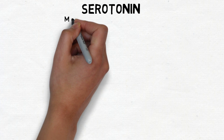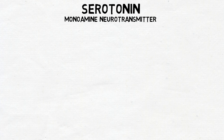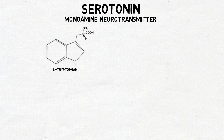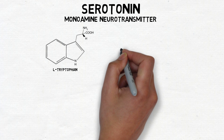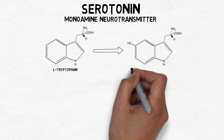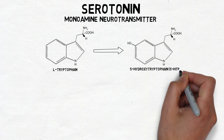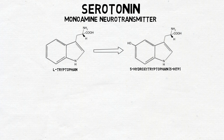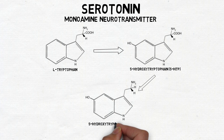Serotonin is a monoamine neurotransmitter, a term that refers to its chemical structure and the fact that it is derived from an amino acid. To synthesize serotonin, the amino acid tryptophan is converted to 5-hydroxytryptophan, or 5-HTP, and 5-HTP is converted to serotonin, or 5-HT.